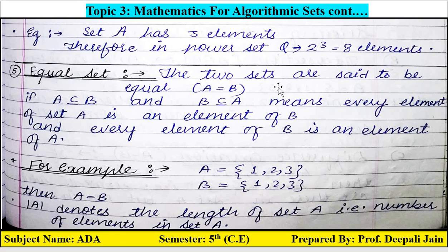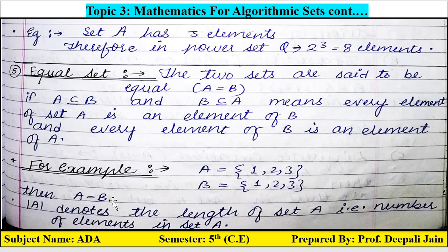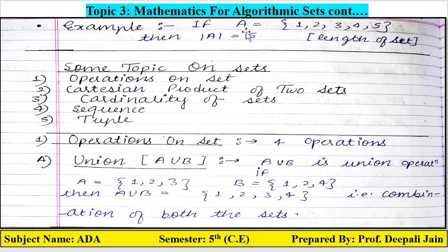Fifth definition is equal set. Two sets are said to be equal — A equals B — if A is a subset of B and B is a subset of A. This means every element of set A is an element of B, and every element of B is an element of A. For example, if A = {1, 2, 3} and B = {1, 2, 3}, both sets have the same elements present in each other, so A = B. The mode of A, written as |A|, denotes the length of the set — the number of elements.